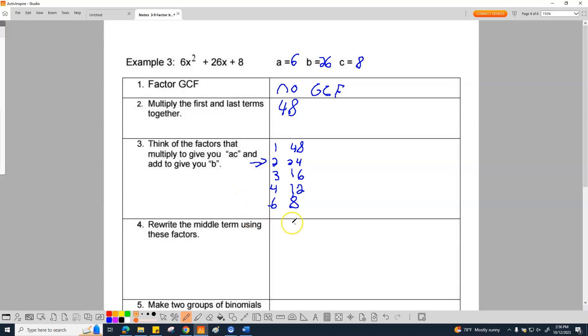So I know how to rewrite this. Let's rewrite this whole thing. 6x squared plus 2x plus 24x plus 8.